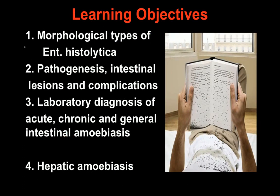At the end of the topic, all of you should be able to draw and label the morphological forms of this parasite. You should be able to discuss the pathogenesis, intestinal lesions, and complications of Entamoeba histolytica. You should be familiar with the lab diagnosis of acute, chronic, and general intestinal amoebiasis, and you should know everything about hepatic amoebiasis.